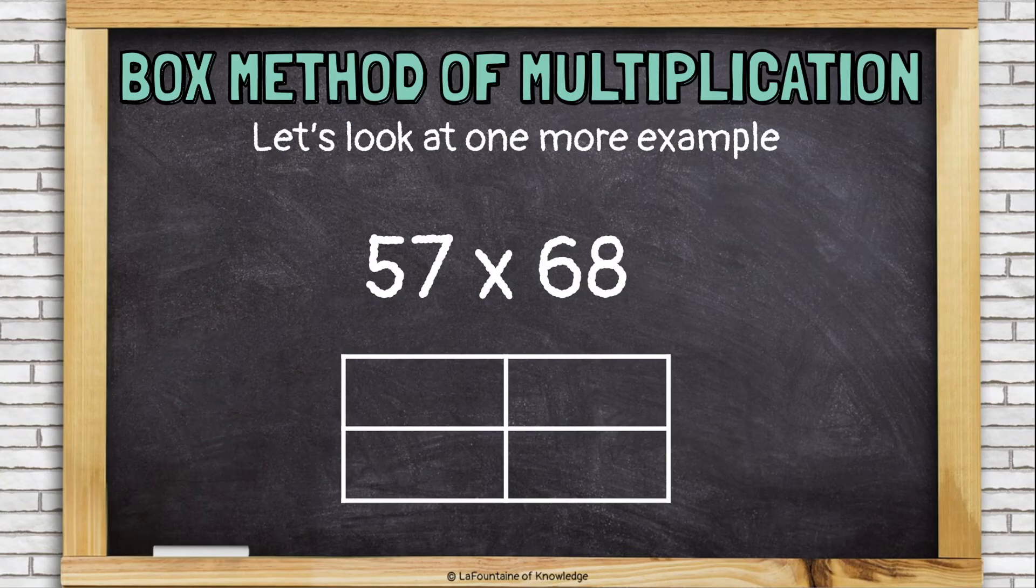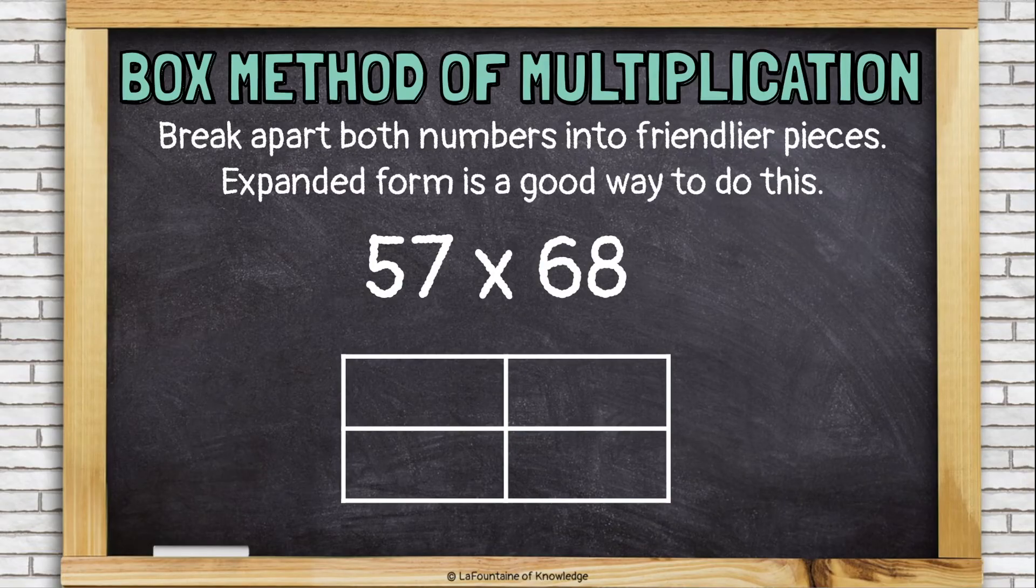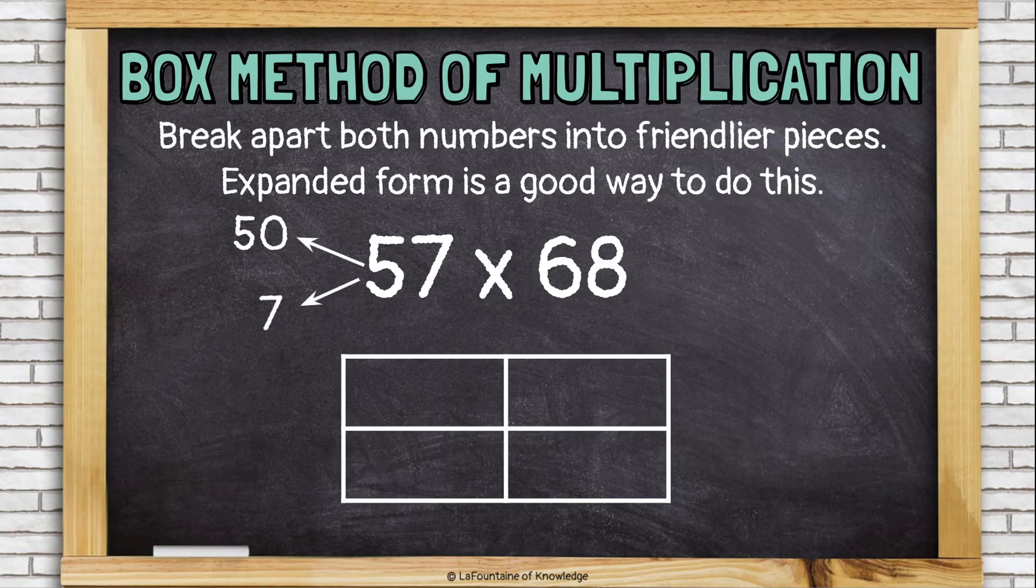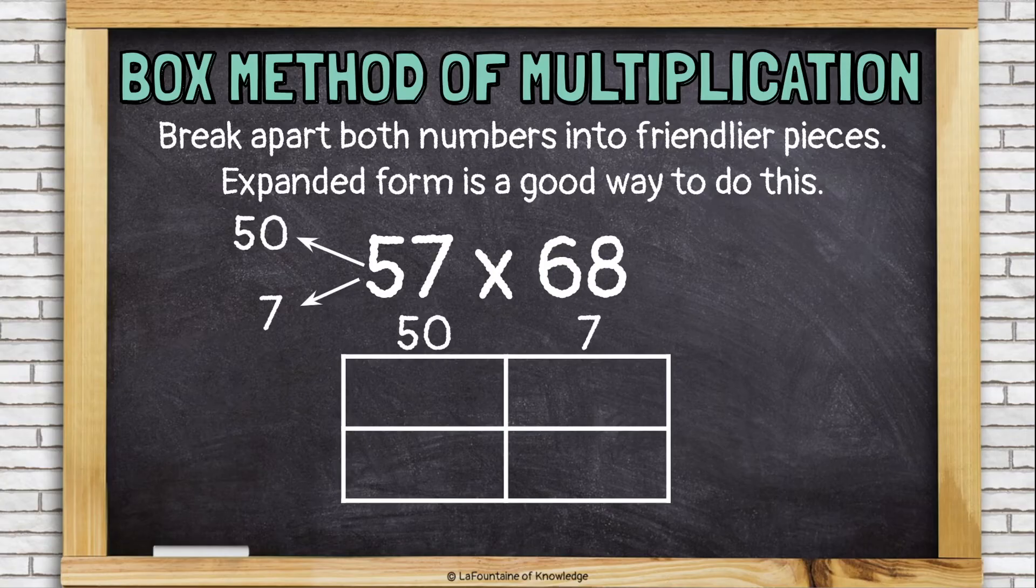Let's look at one more example. This time, 57 times 68. So, I have my boxes, 2 by 2. And I'm going to break up my numbers. 57 becomes 50 and 7. And I'll go ahead and put those along the top of my boxes. 68, I'm going to break into 60 and 8 and put that on the side.